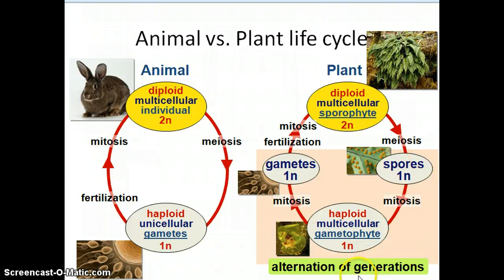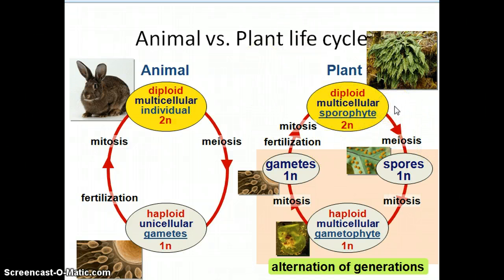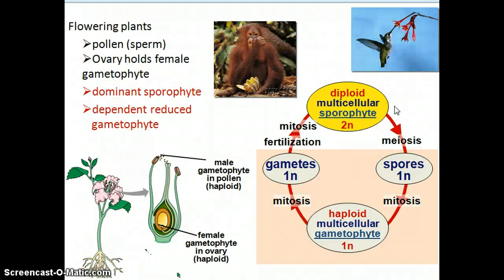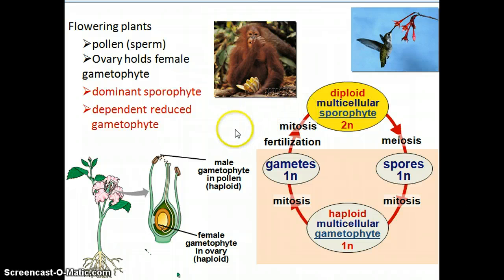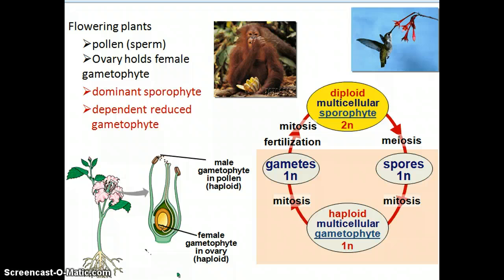The alternation of generations is the one between the sporophyte and the gametophyte. You can see it represented here — the pink is the gametophyte and the clear white is the sporophyte. What's important to point out is that flowering plants have the equivalent of sperm and egg: in a flowering plant, the sperm is the pollen, and the egg is the gametophyte, which is within the ovary.